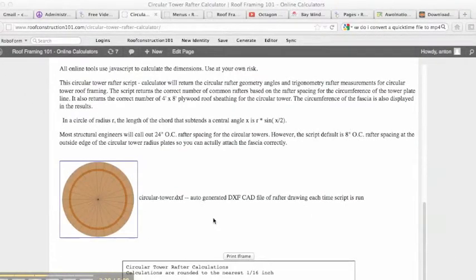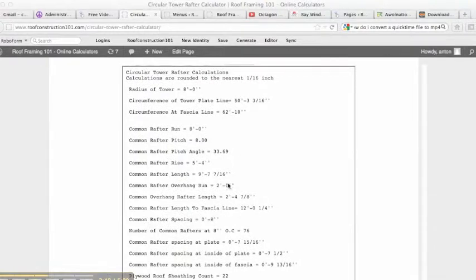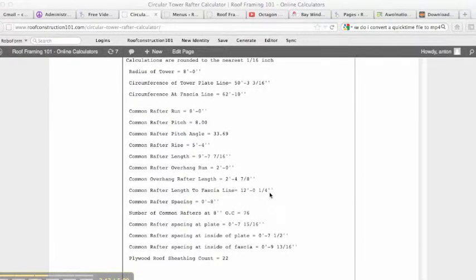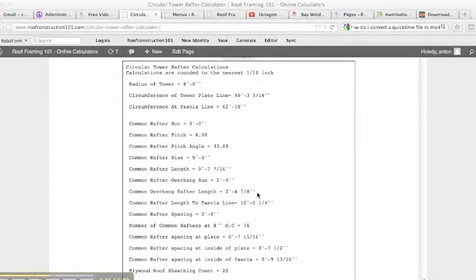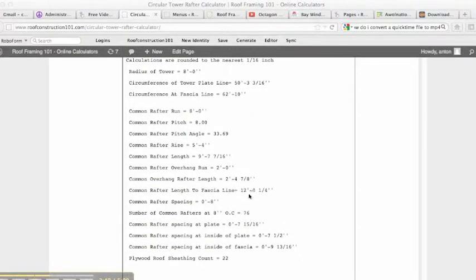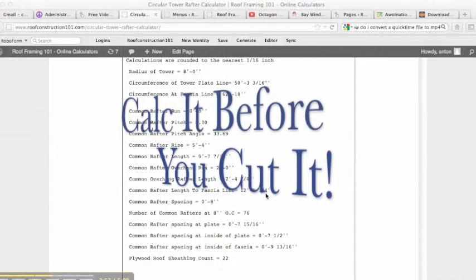So back to this. We have overhang length, 2 feet. Common rafter overhang is 2 foot 4 and 7/8ths. That's the tail length. Common rafter length to the fascia lines, 12 foot to the fascia. So you know how long material you're going to need.